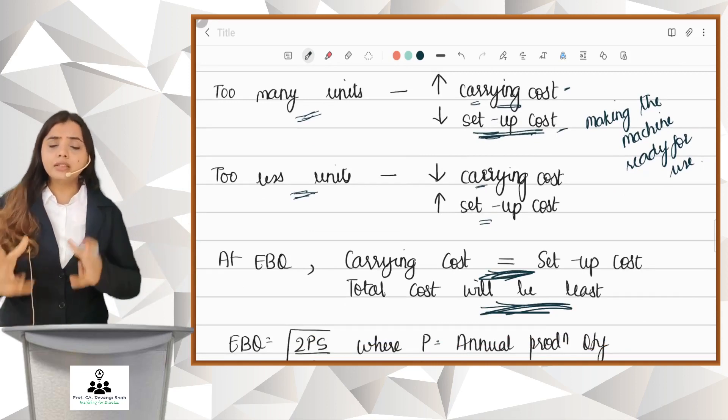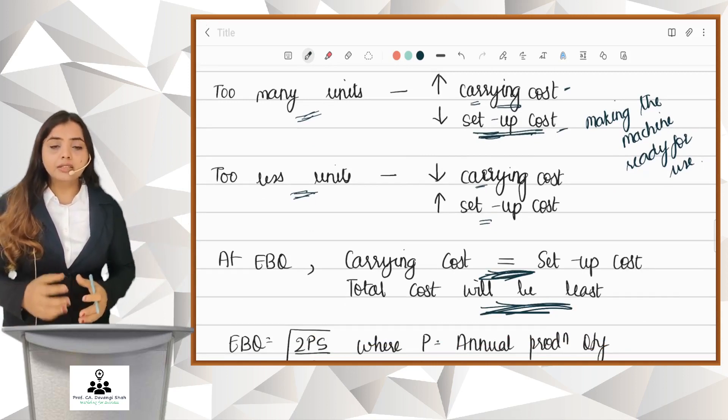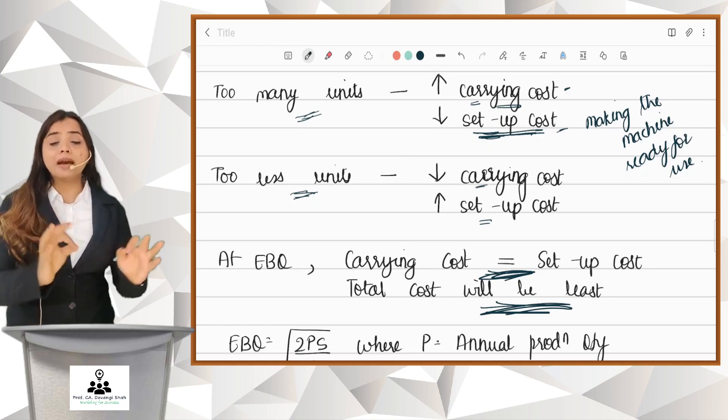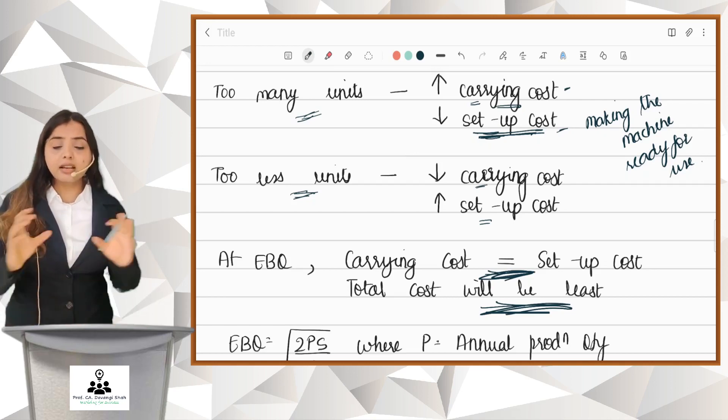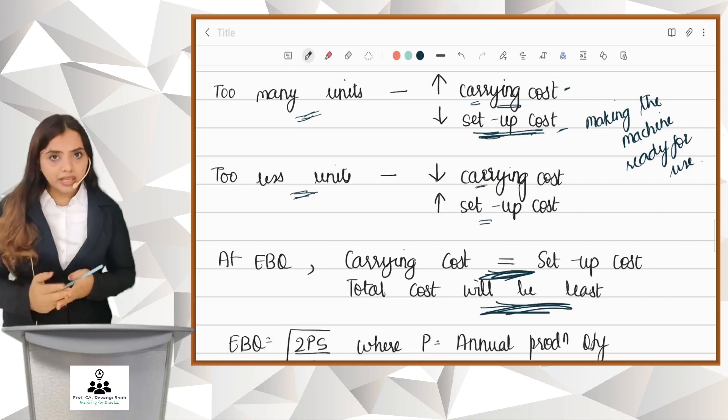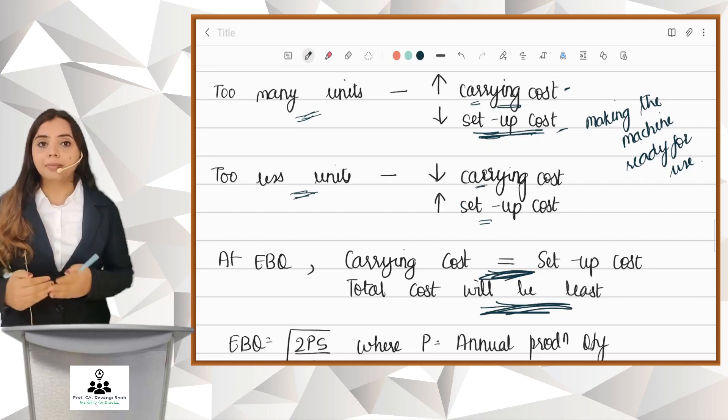When will these two costs be equal? When you produce Economic Batch Quantity. At this level, your two costs will be equal and your total cost will be least.